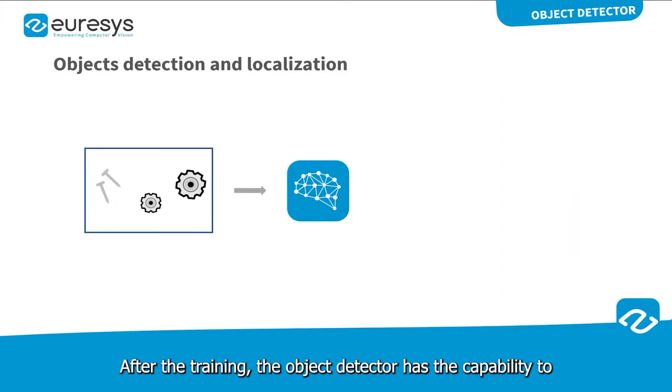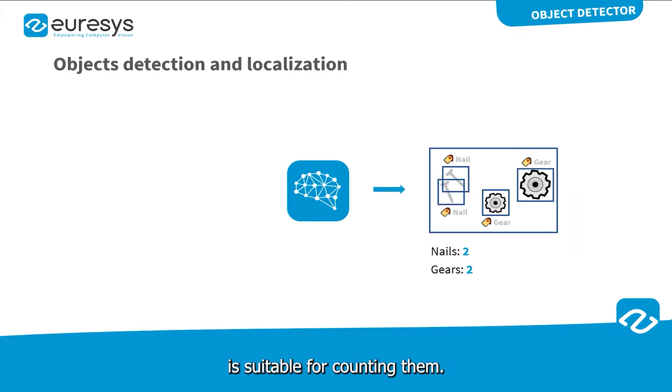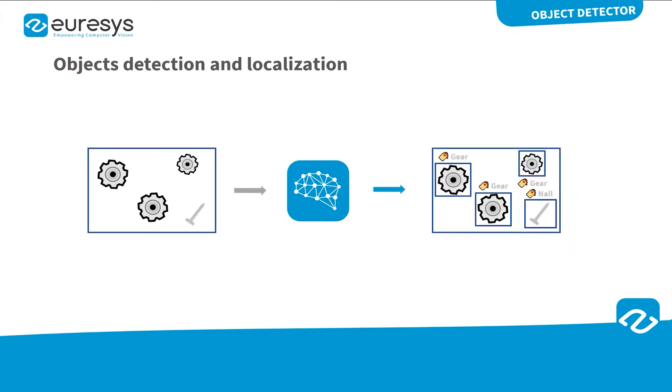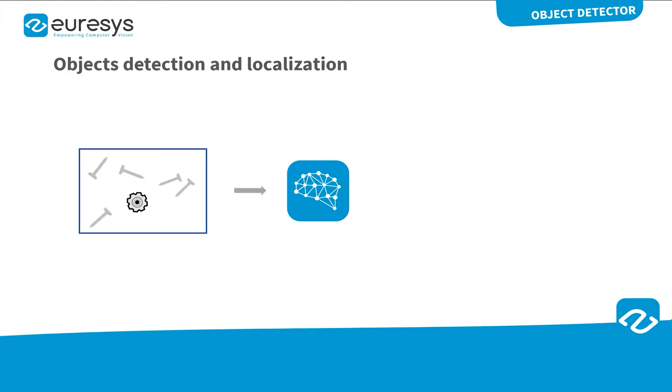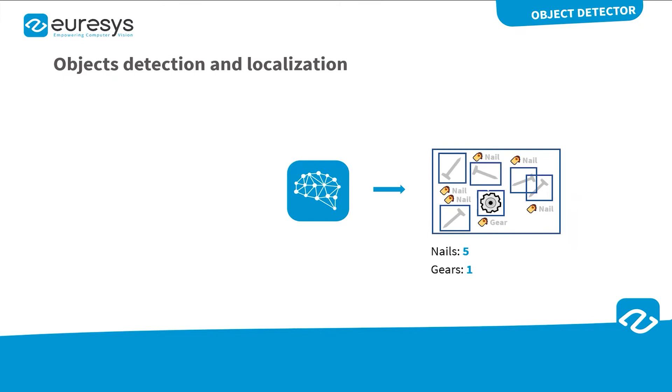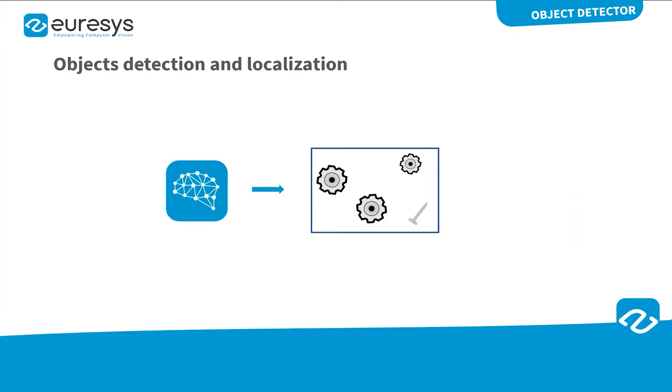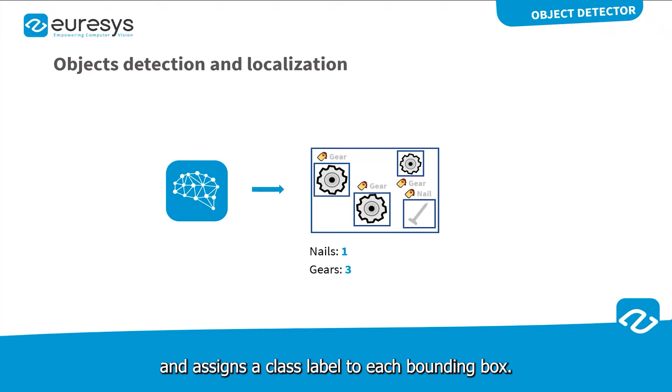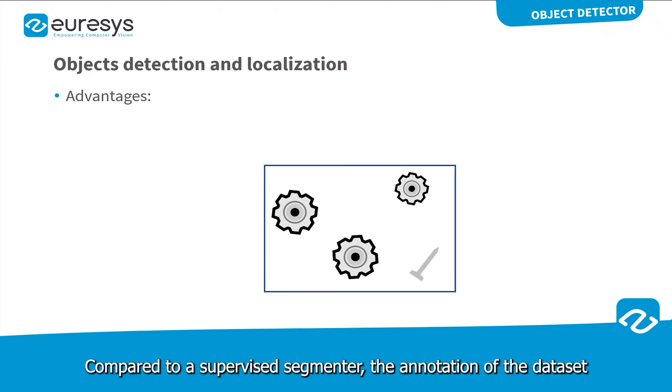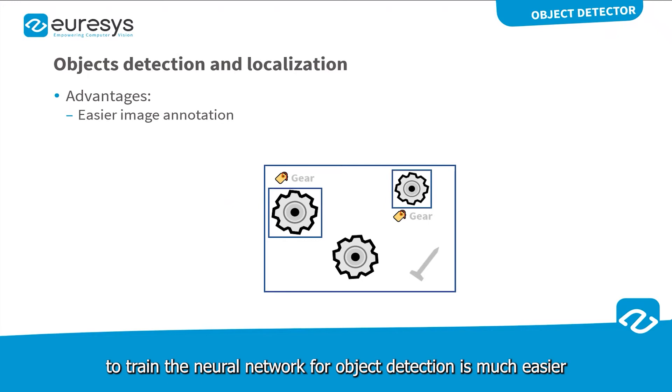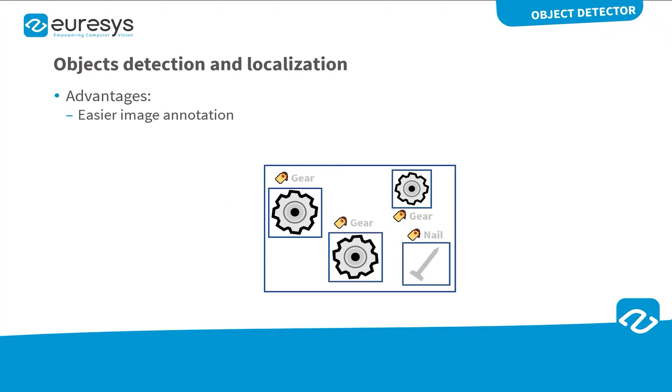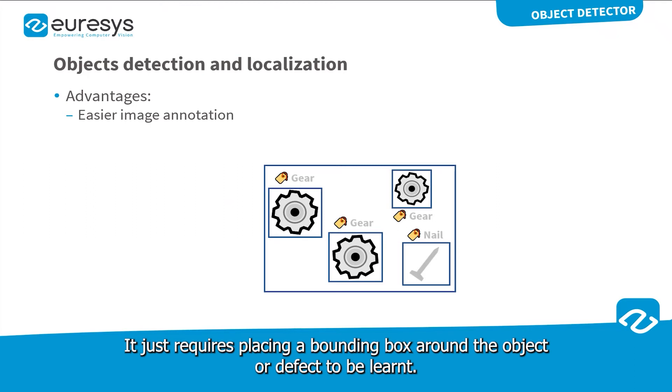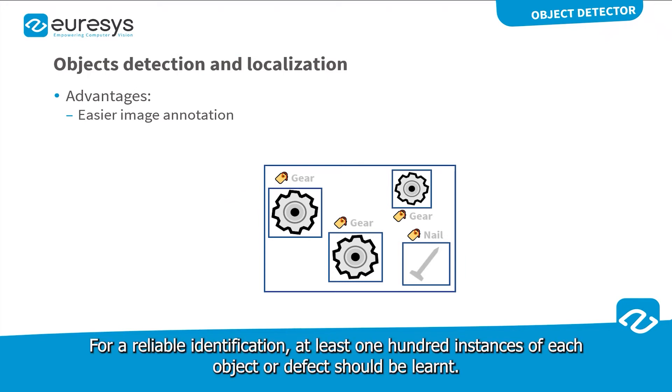In practice, the object detector predicts the bounding box surrounding each object or defect it has found in the image and assigns a class label to each bounding box. Compared to a supervised segmenter, the annotation of the dataset to train the neural network for object detection is much easier. It just requires placing a bounding box around the object or defect to be learned. For a reliable identification, at least 100 instances of each object or defect should be learned.